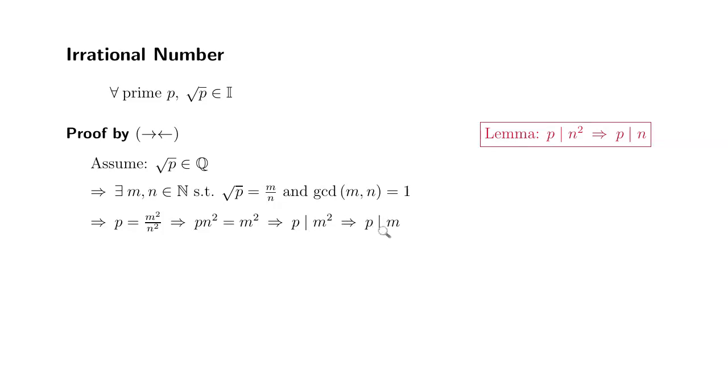So once we know that m is a multiple of p, by definition we can say there exists some integer k such that m can be written as a multiple of p, so it's pk.